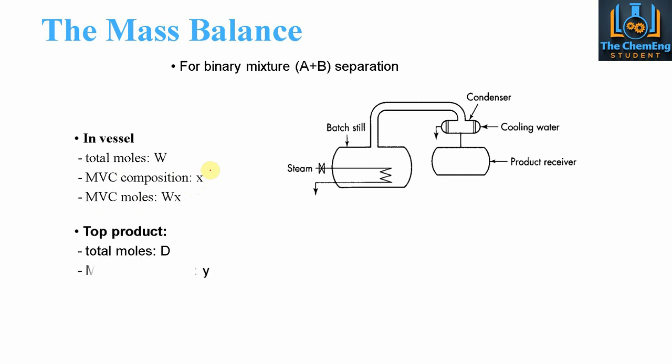In the top product, the total number of moles is denoted by D, and the more volatile component composition is given by Y. So the more volatile component moles is D multiplied by Y. We can also write Y average here, because this is a rough estimation of the composition of the more volatile component in the vapor phase.